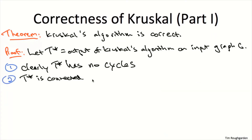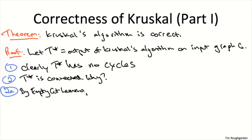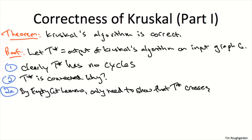What's a little less obvious is that as long as the input graph is connected, Kruskal's algorithm will output a connected subgraph, and therefore a spanning tree. To argue the output is connected, we'll use the Empty Cut Lemma — a graph is connected if and only if for every cut, there's at least one crossing edge. So to prove T star is connected, we just have to prove that for every single cut, it has at least one edge crossing that cut.